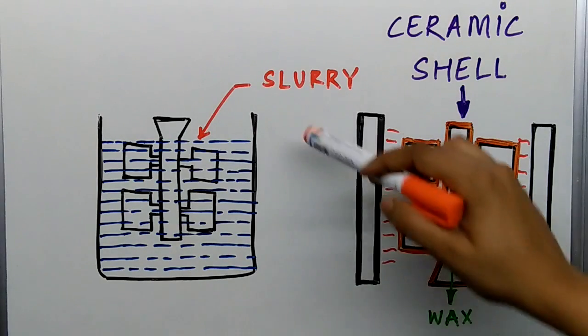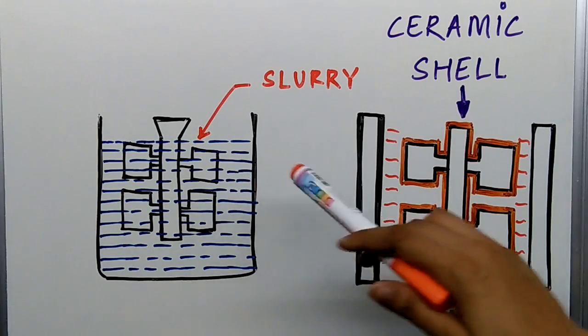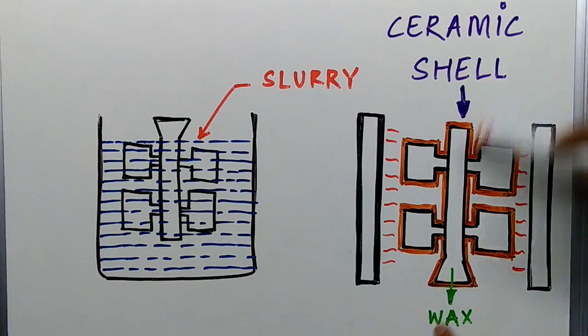Now once the runner assembly is made, there's the slurry tank in which it is dipped. The slurry tank consists of silica flour, ethyl silicate, and water, and some binding acids as well. So this runner assembly is dipped into the slurry tank three or four times until the desired thickness of the shell is attained. Once the desired thickness is attained, it is coated with very fine grains of ceramic.